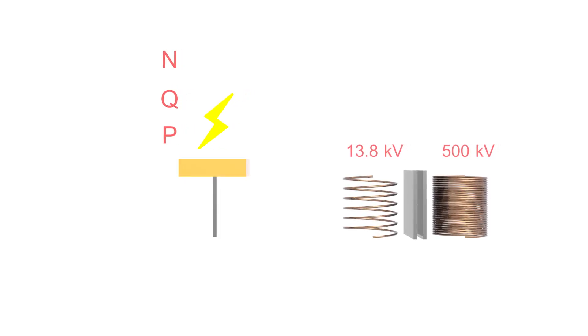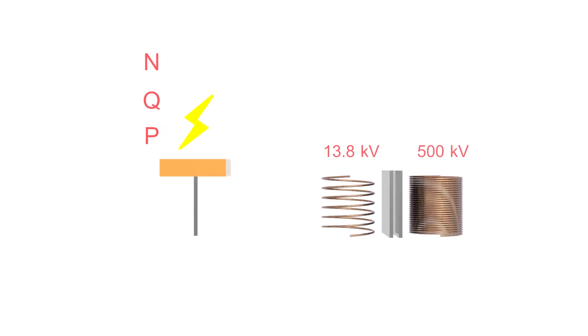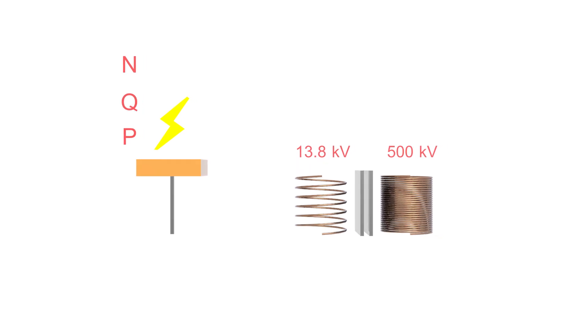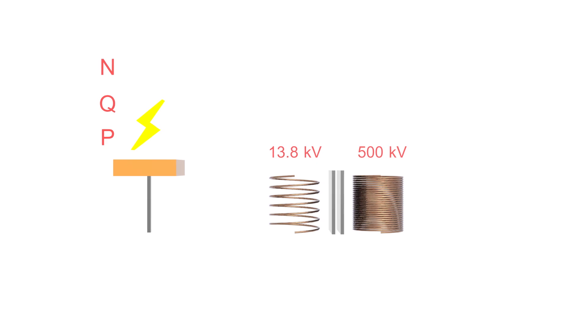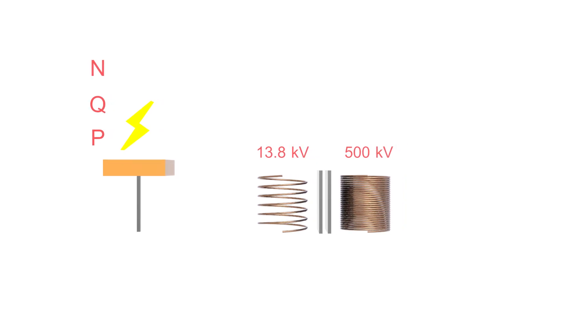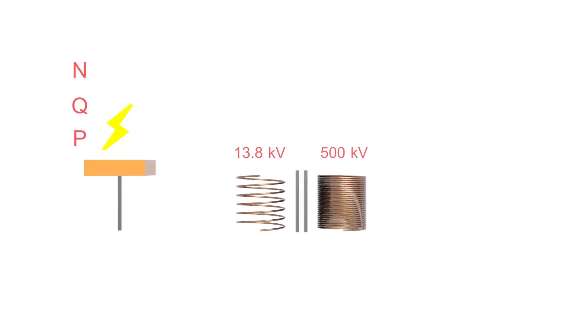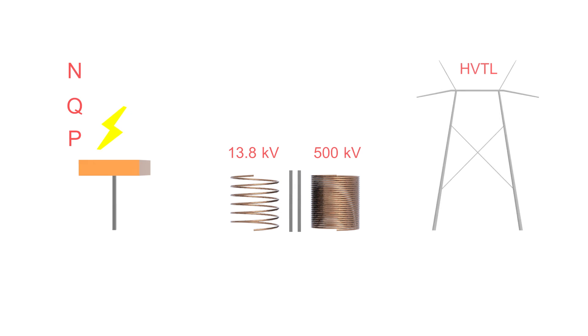Power transformers are used to transform the 13.8 kilovolts of the generators to around 500 kilovolts. You can see that the second winding contains more coil turns than the first one. This means the voltage is increased. Finally, the energy is transported by means of high-voltage transmission lines.